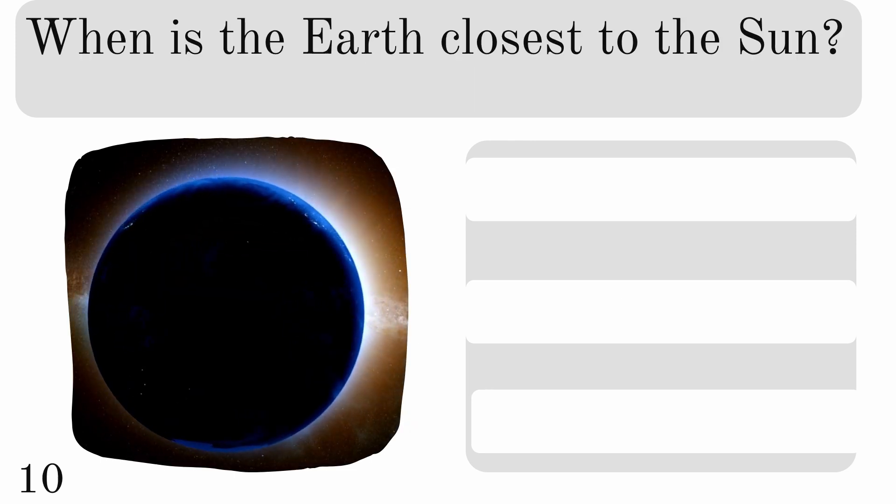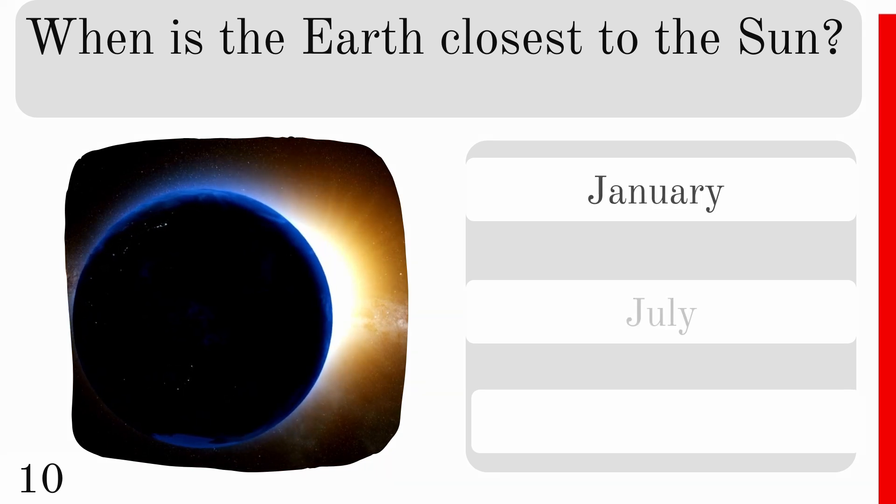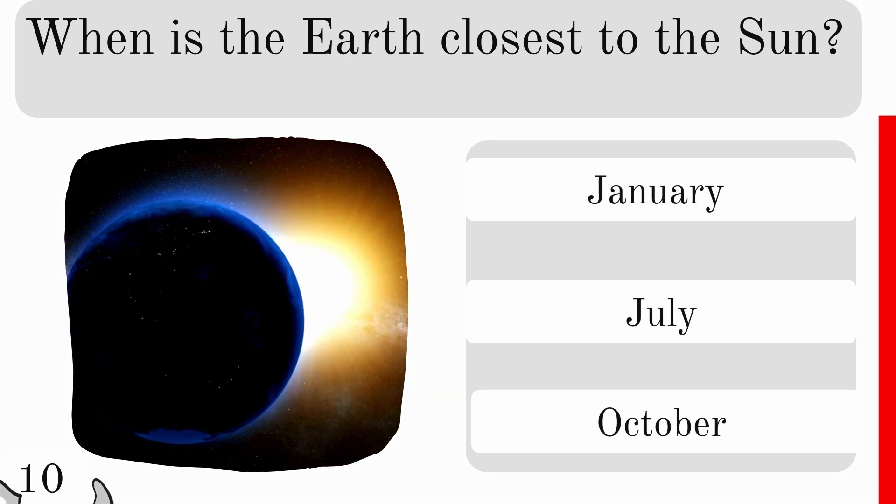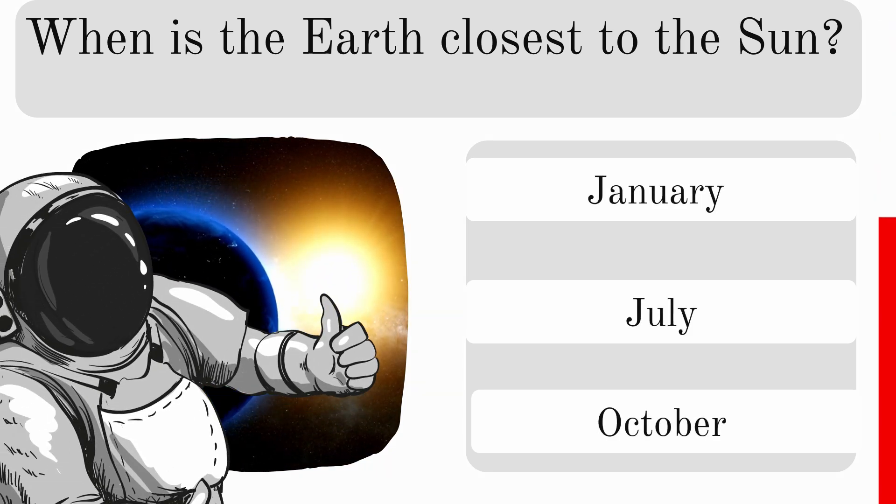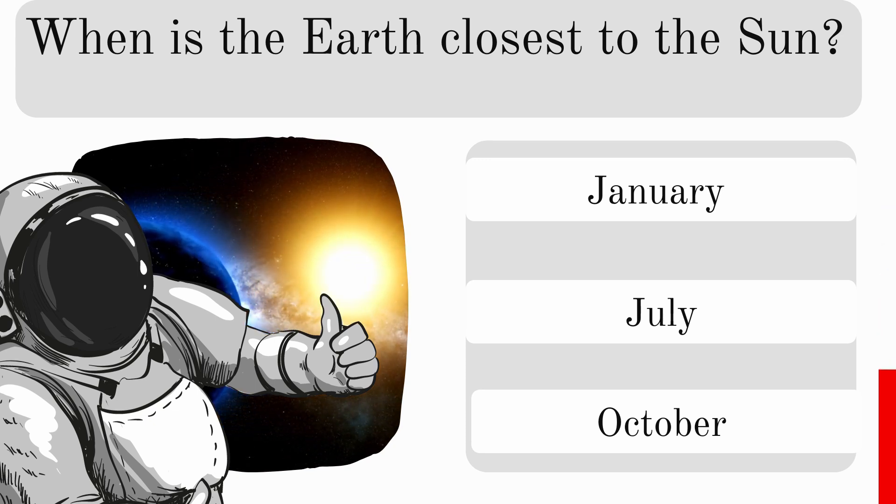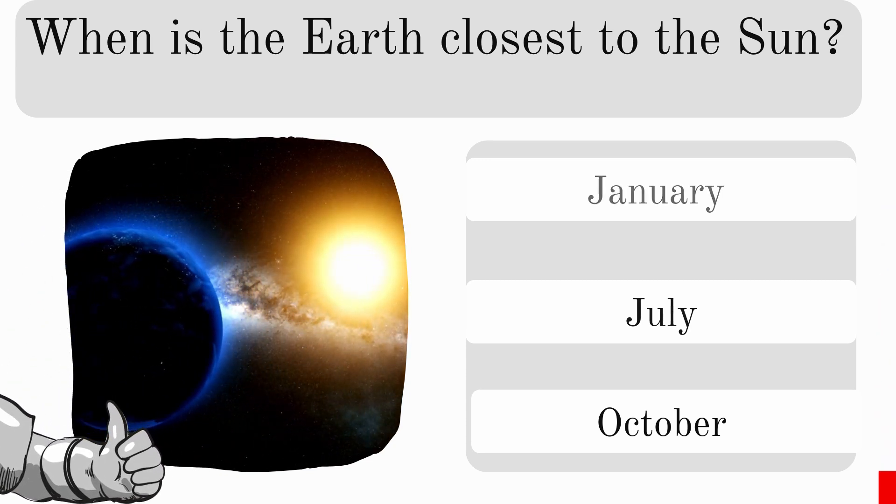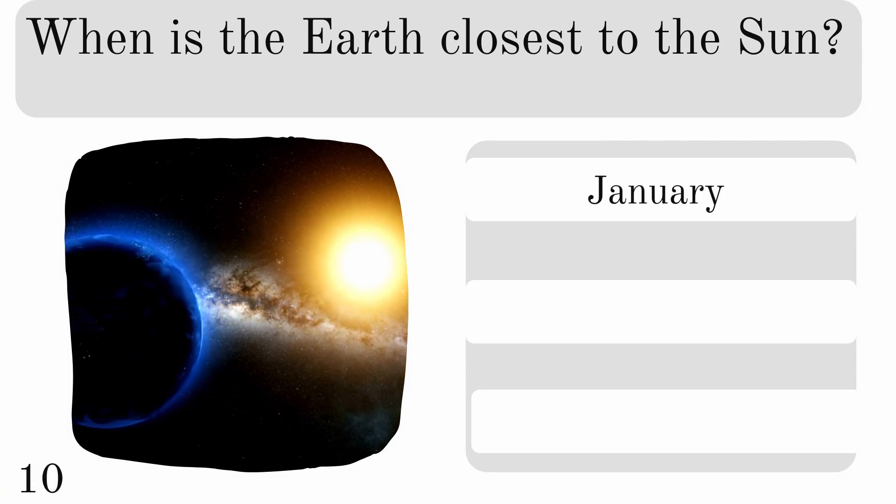When is the Earth closest to the Sun? In January, July, or October? If you are enjoying this quiz, please give it a thumbs up. It helps get it out to more people, thank you. And the answer there is January.